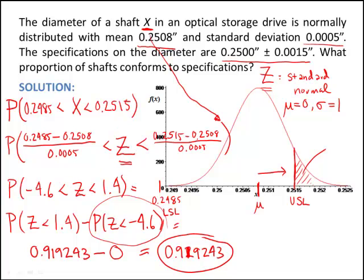It was just a matter of finding the probability that a standard normal was between negative 4.6 and 1.4. We went to the standard normal table, read it, and got our probabilities. The normal table is very handy for computing normal probabilities, as long as you do the conversion to a standard normal first. This is a very typical way to solve for probabilities when we have normal random variables. Hope this helps — we'll talk again soon.